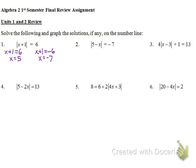Checking: plugging in 5 gives |5 + 1| = |6| = 6. Plugging in -7 gives |-7 + 1| = |-6| = 6. Both solutions check out. I place points at -7 and 5 on the number line.